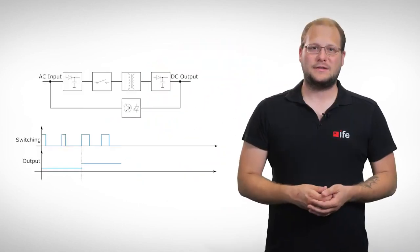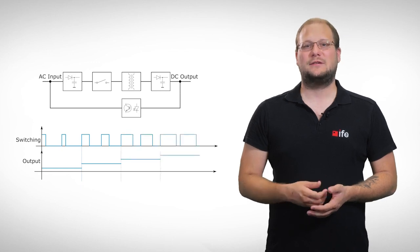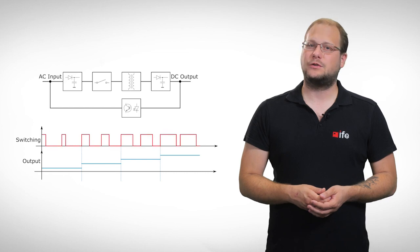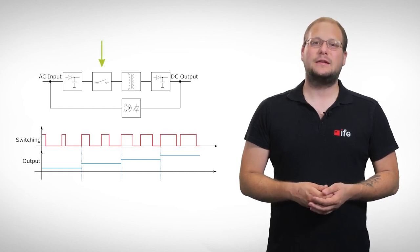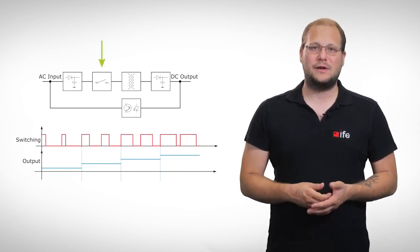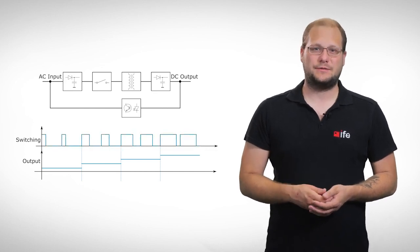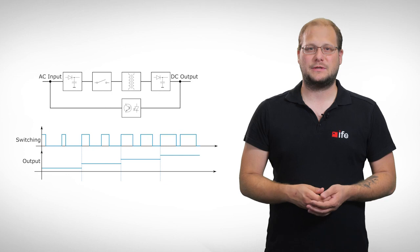The nice thing about these kind of power supplies is that in general the output voltage only depends on the duty cycle of the switching element. This makes regulation of the voltage really easy. Diodes and transistors, especially MOSFETs, are often used as switches. There is a variety of switched mode power supply topologies that can be used. In this and the following videos we want to have a look at the most important ones.